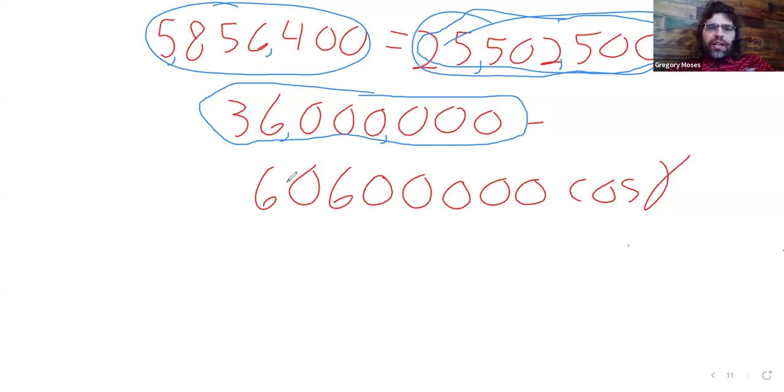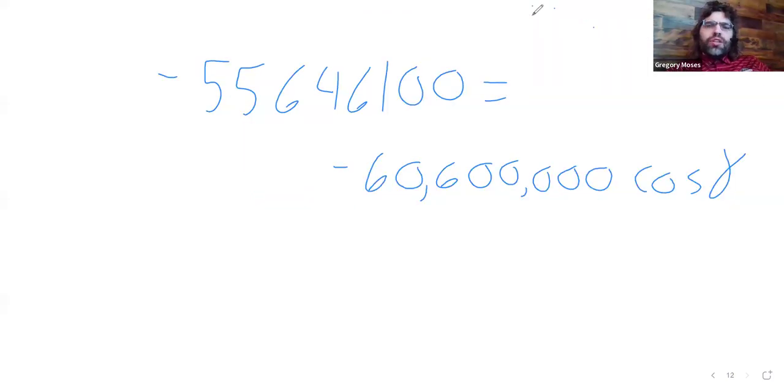Then we divide by this huge number down here. The only thing to be careful of is to make sure that when you do the division, you remember that you're dividing by a negative number. So, you wind up with the cosine is 0.9183.